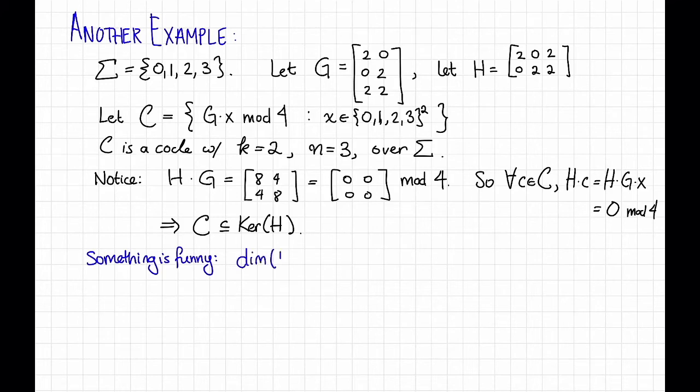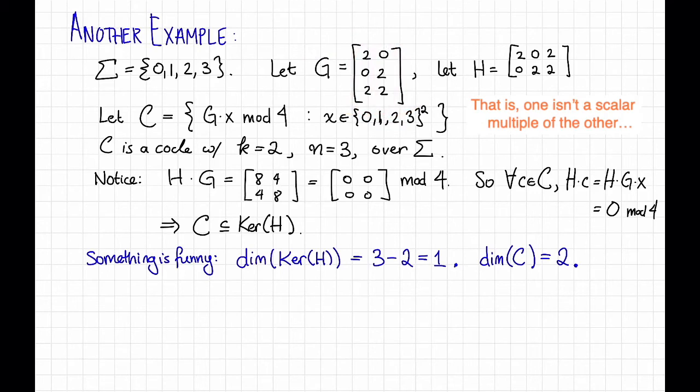First, the dimension of the kernel of H, if we were to follow the logic that we had in the previous video, should be 3 minus 2, which is equal to 1. That's because if we look at this matrix H, it sure looks like these two rows are linearly independent, so H should have rank 2, and 3 minus 2 is equal to 1.